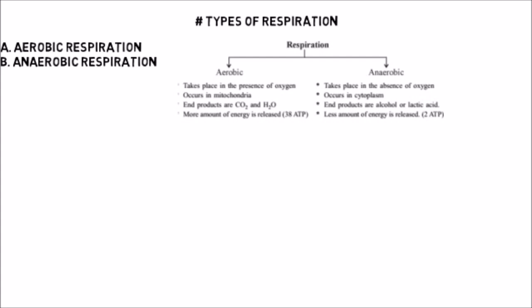Another difference: during aerobic respiration, end products formed are carbon dioxide and water. And in anaerobic respiration, end products are alcohol and lactic acid. Moreover, aerobic respiration releases more energy — that is 38 ATP — and anaerobic respiration releases a lesser amount of energy, that is 2 ATP per glucose molecule. Now let us understand aerobic and anaerobic respiration in detail.